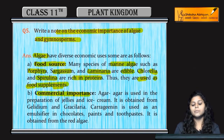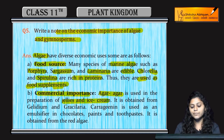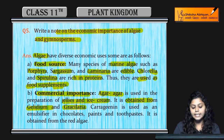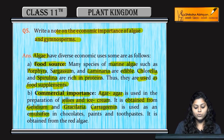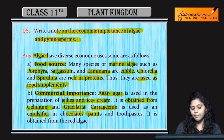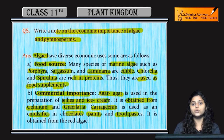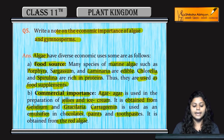For commercial importance, agar obtained from gelidium and gracilaria is used for making jellies and ice creams. Carrageenan, obtained from red algae, is used as an emulsifier in chocolates, paints, and toothpaste.